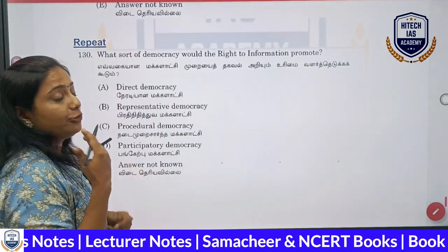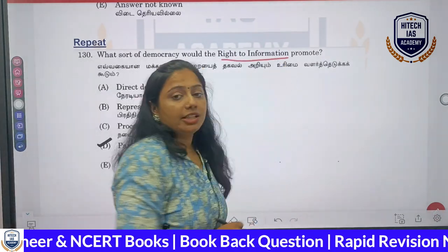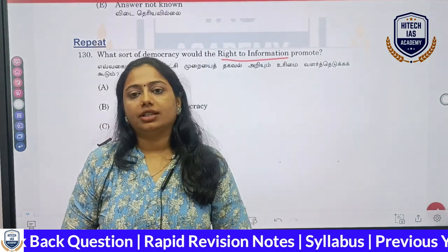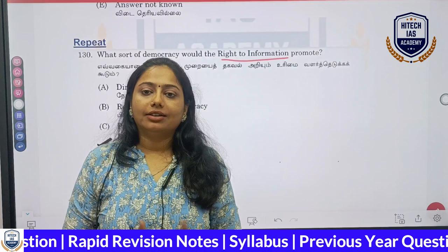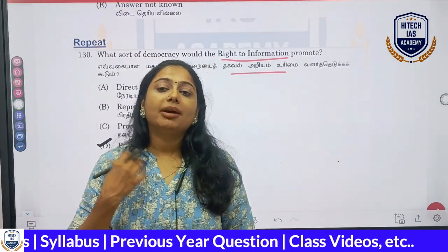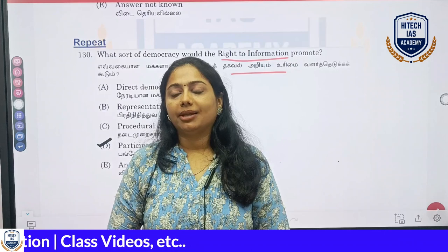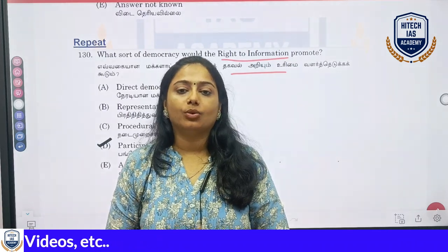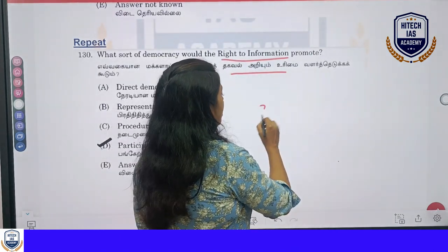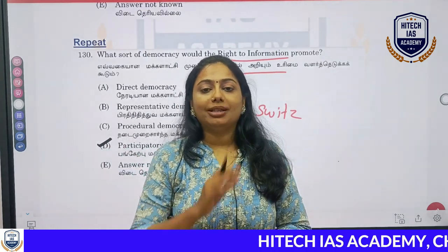Right to Information promotes transparency. This is a good question — how can we understand this concept? Right to information relates to what kind of democracy. In indirect democratic countries, think of Switzerland as the example of direct democracy.